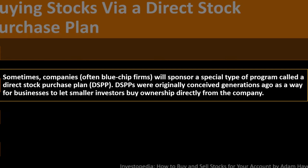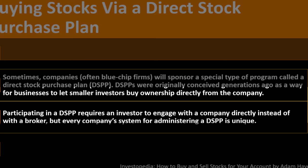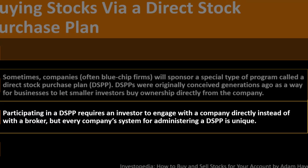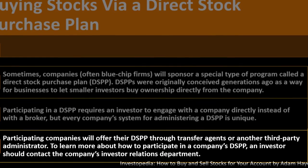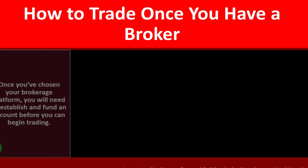Buying stocks via a Direct Stock Purchase Plan (DSPP): sometimes companies — often blue chip firms — sponsor a DSPP, originally conceived as a way for businesses to let smaller investors buy ownership directly from the company. Participating requires an investor to engage with the company directly instead of with a broker. Every company's DSPP system is unique; participating companies often administer the plan through transfer agents or another third-party administrator. Investors should contact the company's investor relations department to learn more.